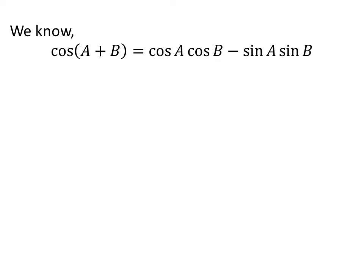We know the famous trigonometry identity cosine of A plus B is equal to cosine of A times cosine of B minus sine of A times sine of B.